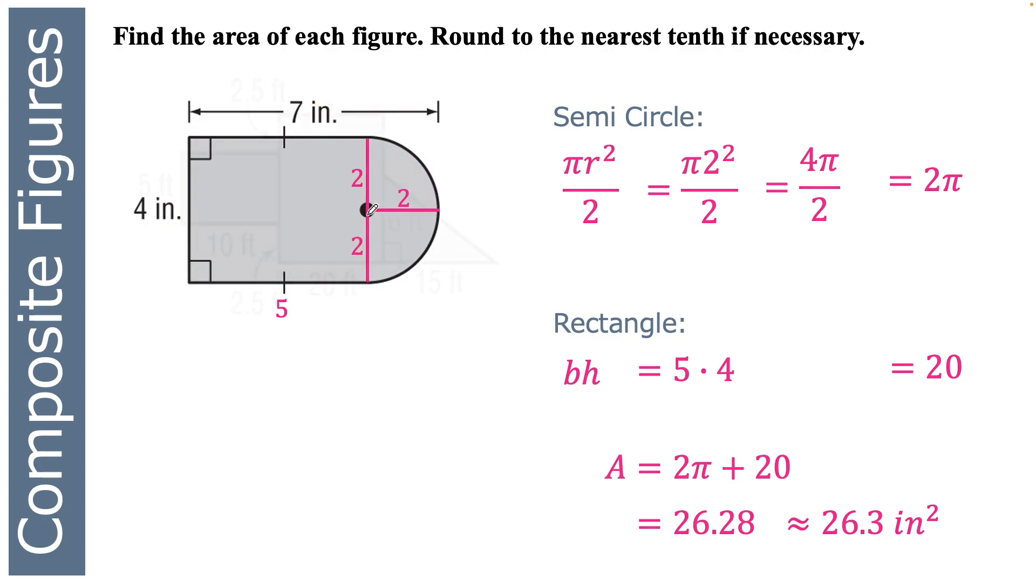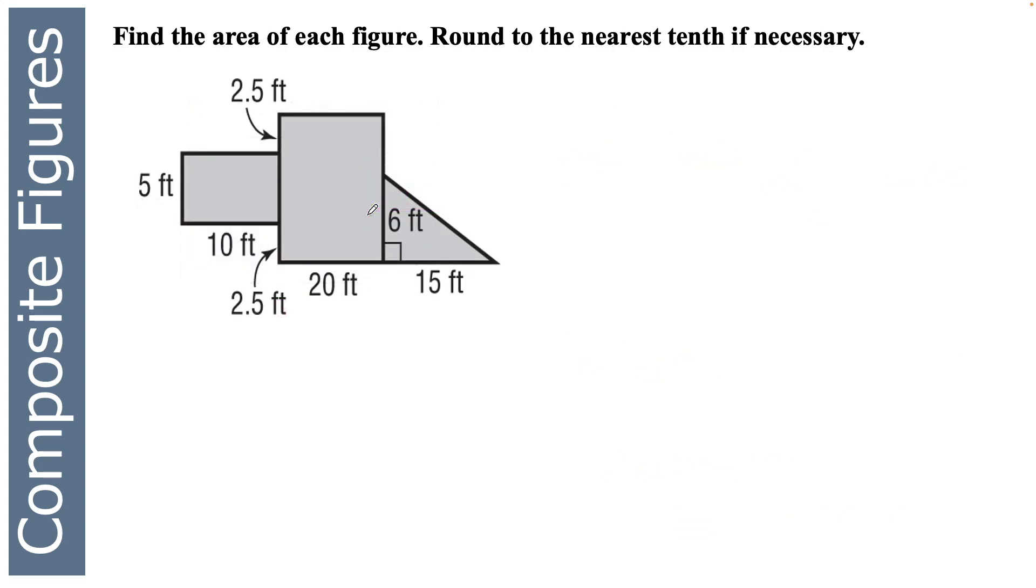Let's try another one. Okay, wow, there's a lot going on in here. What do I see? I see on the far left a rectangle, and then in the middle another rectangle, and on the far right a triangle. So again, the area of a rectangle is base times height, and the area of a triangle is one half base times height. So we'll just find one at a time.